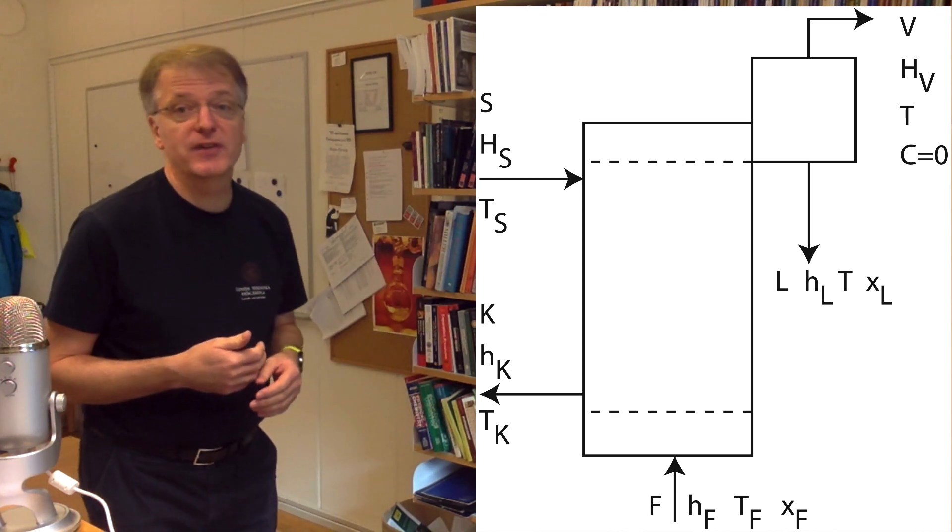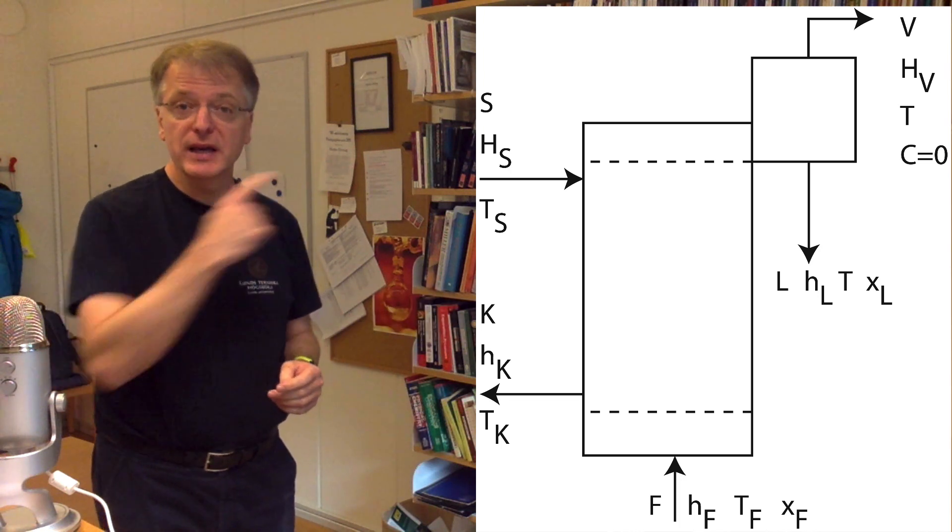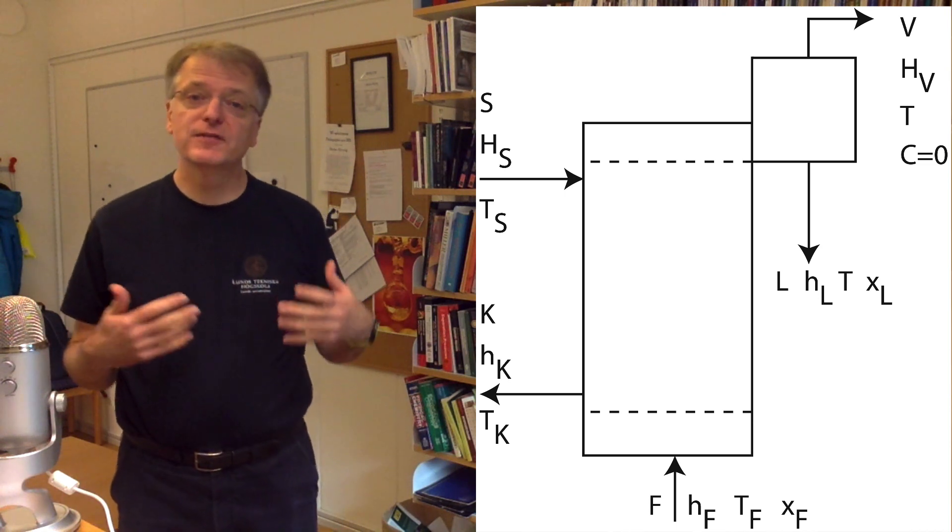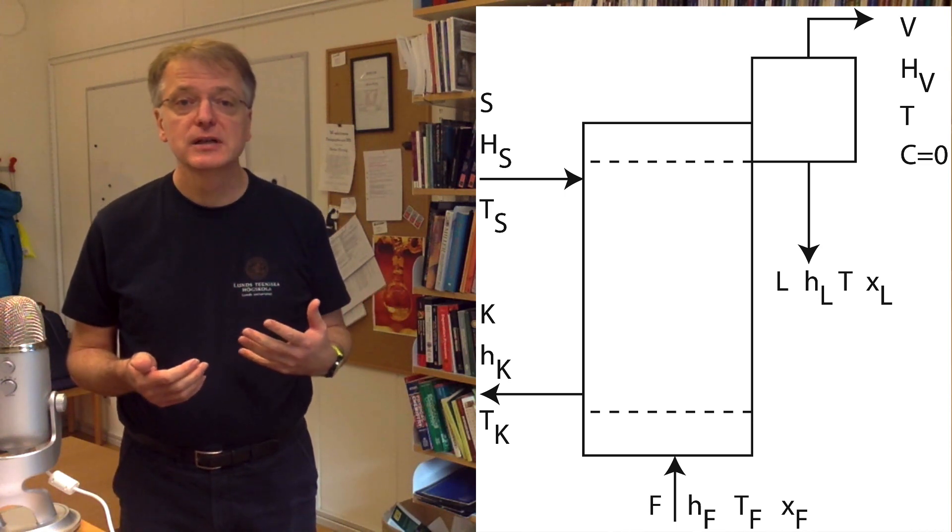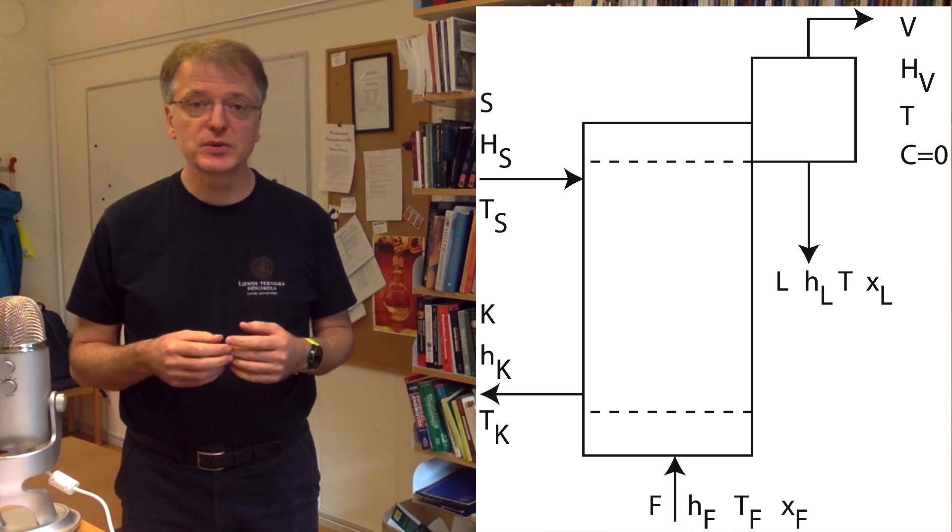A schematic view of a single-effect evaporator looks like this. The feed F is heated up by steam S such that part of it evaporates to form a vapor V free from non-volatile substance. The remaining liquid L leaves the system more concentrated than the feed was.